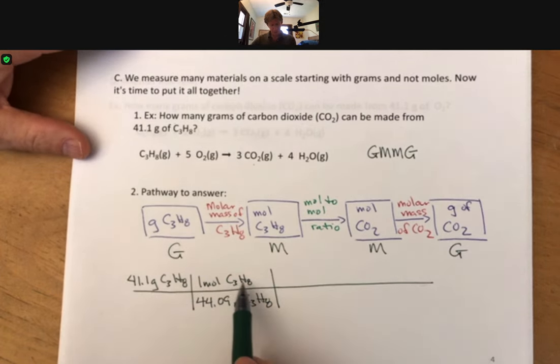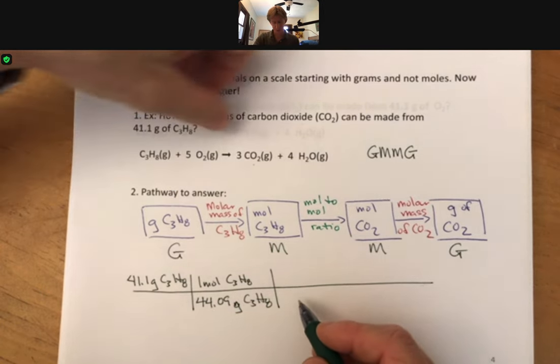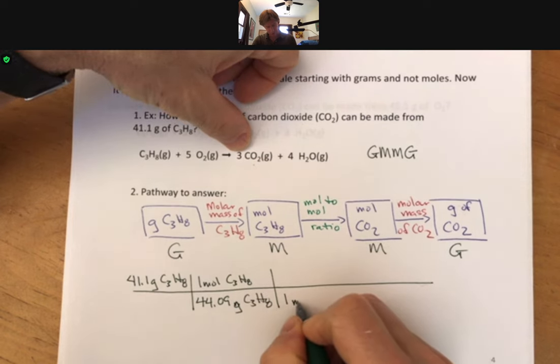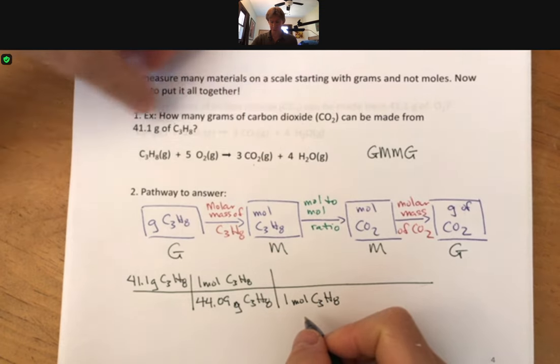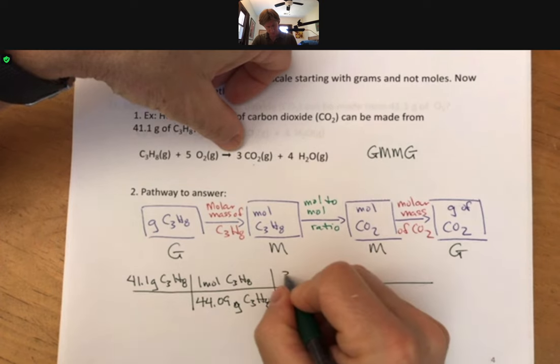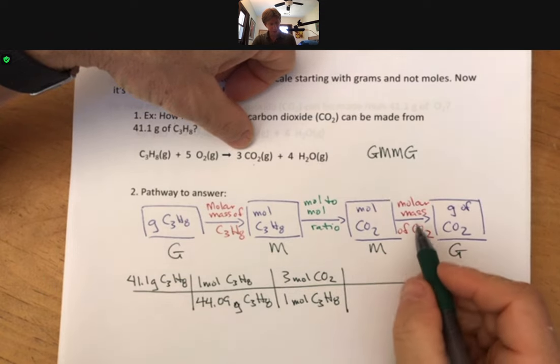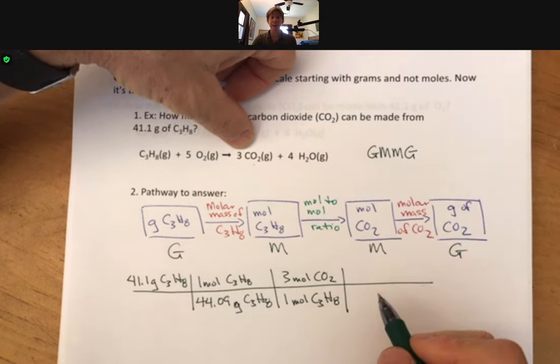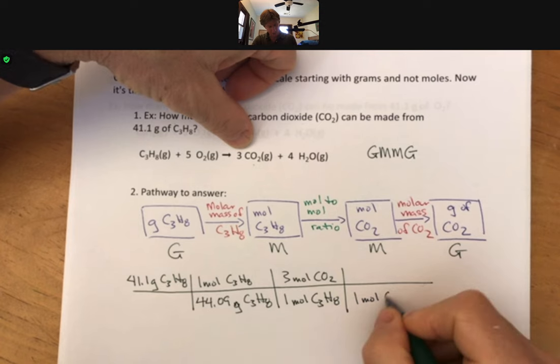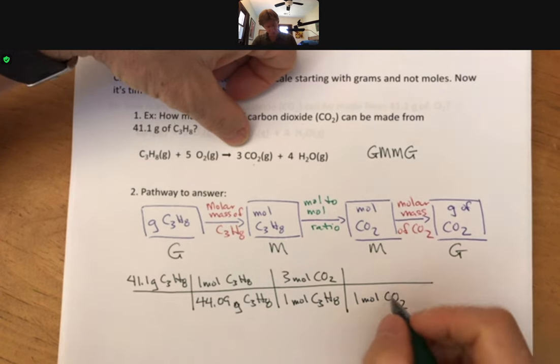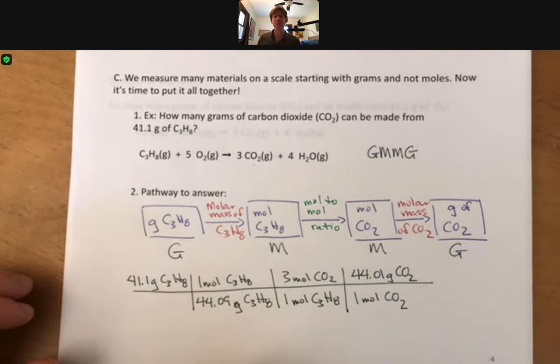Now we have moles of C3H8. Next is going to be our mole to mole ratio. We're going from moles of propane to moles of carbon dioxide. We need to cancel our moles of propane so that goes on the bottom. Here's three moles of carbon dioxide. And our last is going to be the molar mass of carbon dioxide. I just happen to know that one mole of carbon dioxide has a molar mass of 44.01 grams, and so that's what it looks like when you put it into the picket fence.